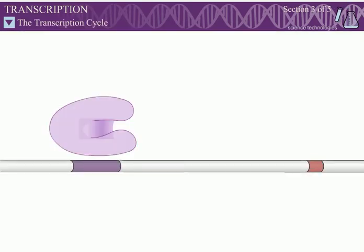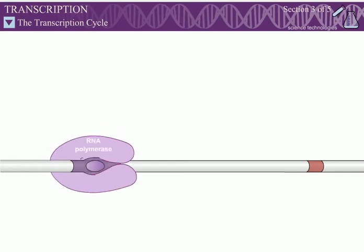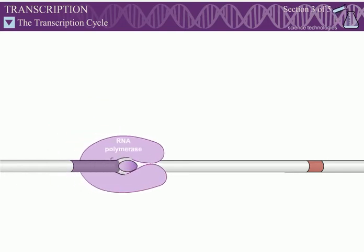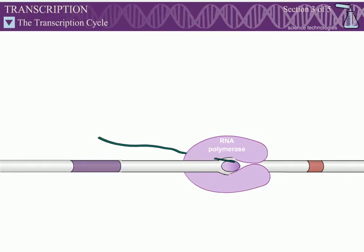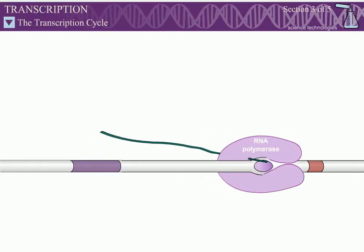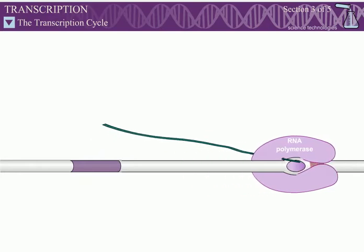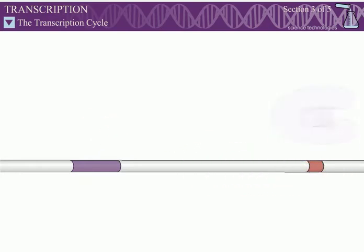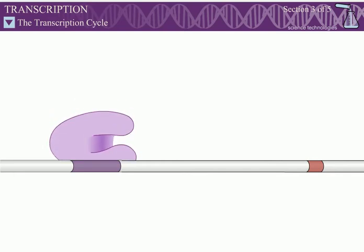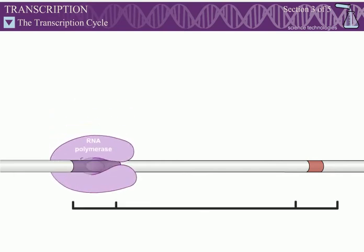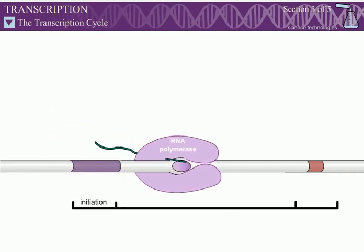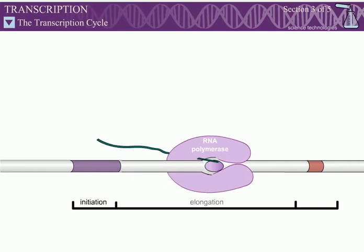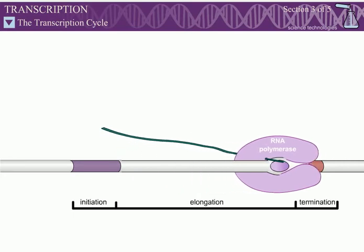The transcription cycle is the series of events between binding of RNA polymerase to the target gene and dissociation of RNA polymerase and the completed RNA transcript from the DNA. The transcription cycle is divided into three phases: initiation, elongation, and termination.